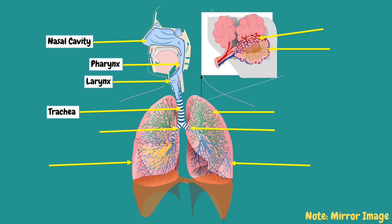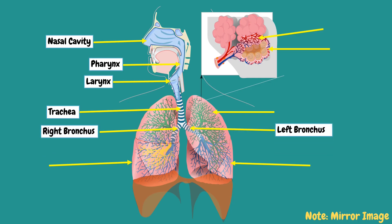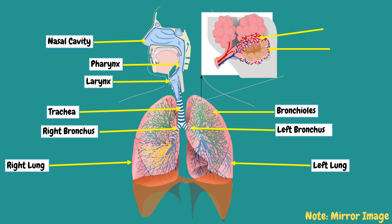The trachea branches into two smaller airways, the left and right bronchi, which lead to the two lungs. Each lung is divided into sections or lobes — three in the right lung and two in the left lung. The left lung is a little smaller than the right lung because it shares space in the left side of the chest with the heart. The bronchi themselves branch many times into smaller airways, ending in the narrowest airways called the bronchioles.